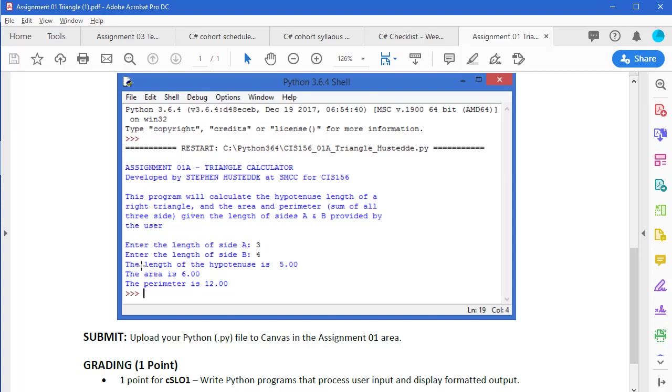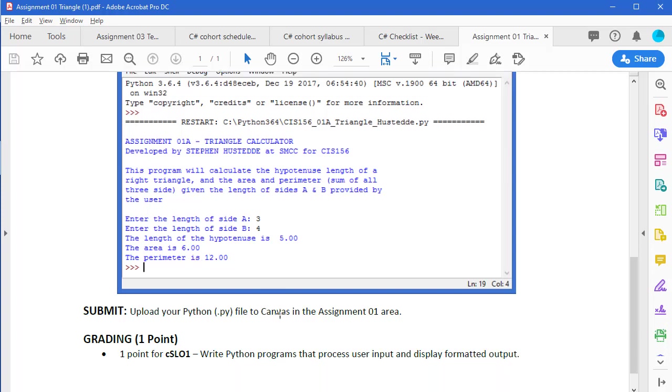And then we're going to use the input statement to allow the user to enter a length of side A and side B. And then we're going to process and calculate the length of the hypotenuse using, of course, the Pythagorean theorem. And then calculate the area and the perimeter. This is worth one point. When you're all done, you're going to take that .py file and you're going to submit it into the Canvas area for assignment one.